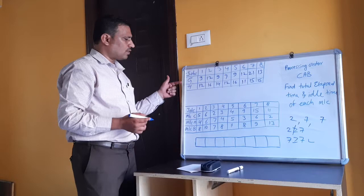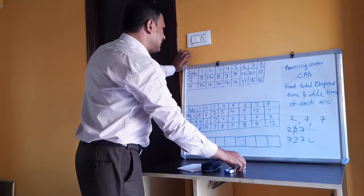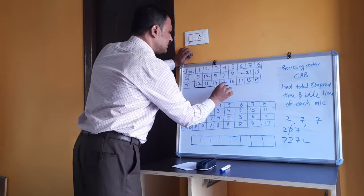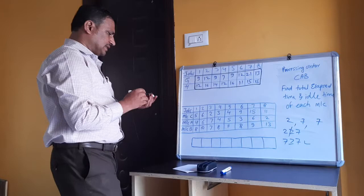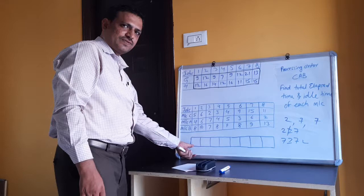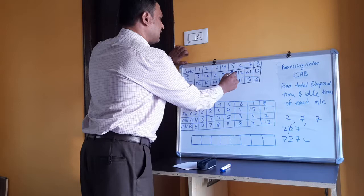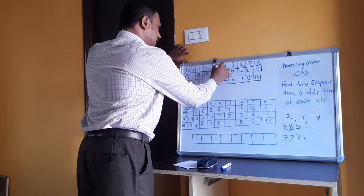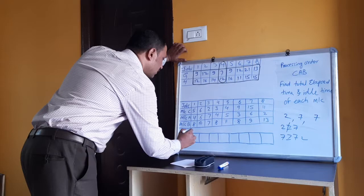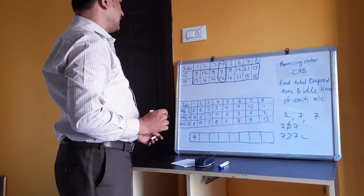After writing G and H, we have to find the sequence. We identify the least processing time in the combined table. If the least processing time is on machine G, we write that job towards the left side. If the least processing time is on machine H, we write that job towards the right side. The least processing time overall is 7, which belongs to job 4 on machine G, so job 4 goes first on the left.